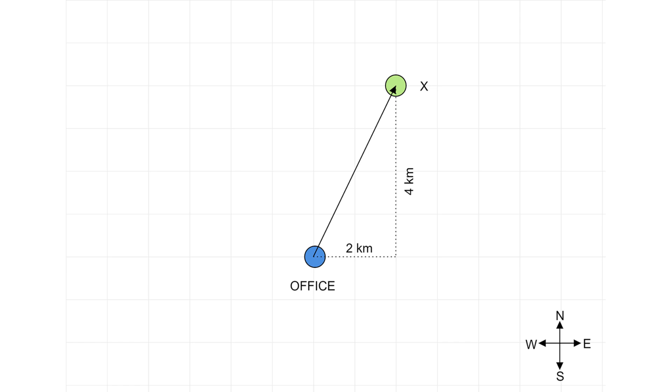For example, if there is this cafe 4km to the north and 2km to the east of their office, A can ask B to meet at that cafe by sending the distance from the office like this 2 0 4 0.